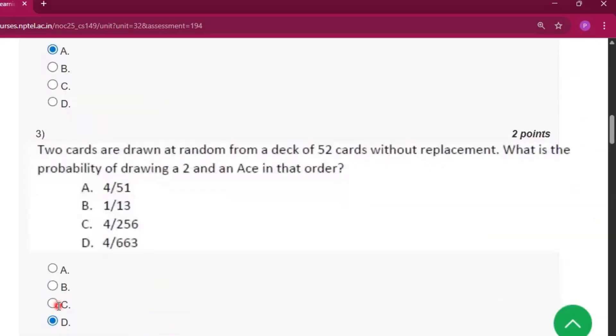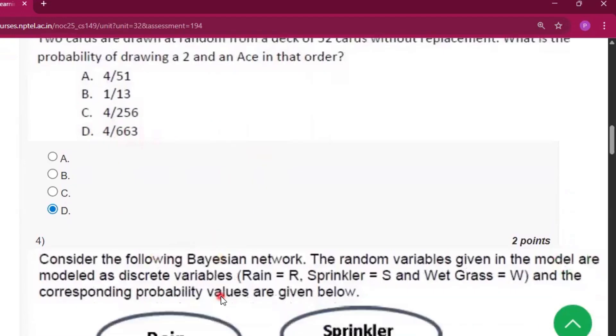Now question number 3, the answer will be 4 by 663, that is 1 by 13 into 4 by 51. I will solve this type of problem in my later video, so please subscribe to my channel.